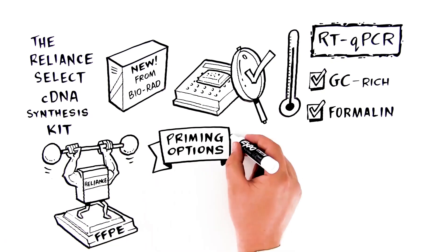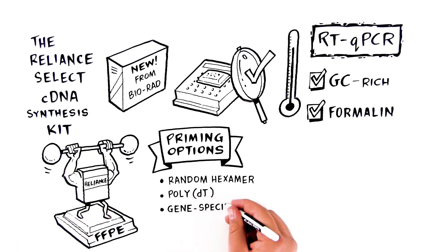With multiple priming options, including random hexamer, polyDT, and gene-specific priming, researchers have the flexibility to choose the best solution for their needs.